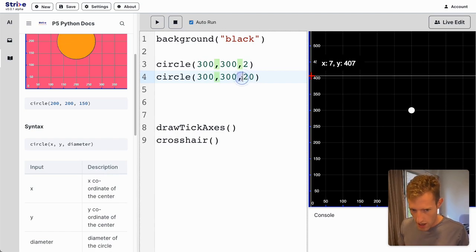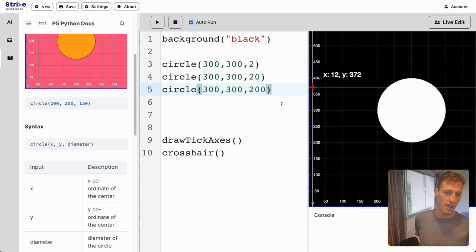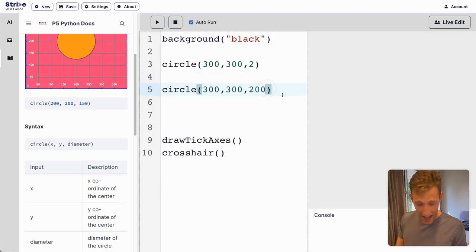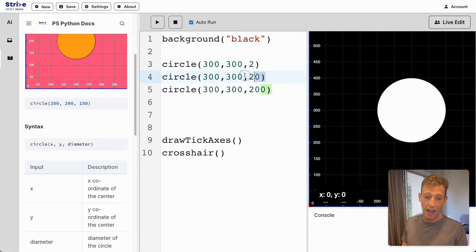If we change the order, here's a quick tip: this circle is being drawn on top of this circle, which is being drawn on top of this circle, so we can't actually see these two circles.